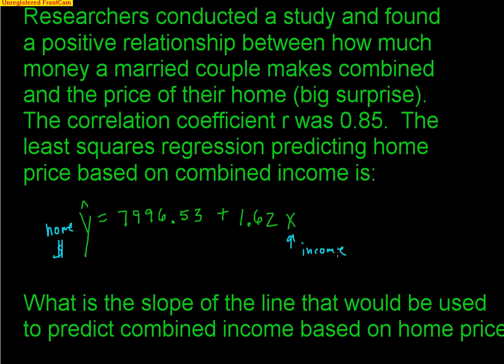So my question is, what is the slope of the line that would be used to predict combined income based on home price? So what if I wanted to switch who's the x and who's the y, who's the explanatory, who's the response? What would my slope be?